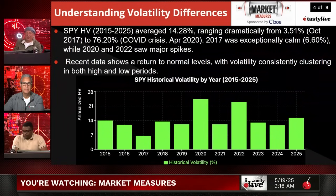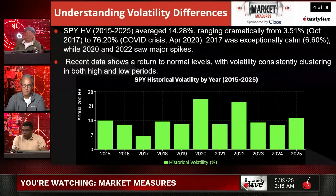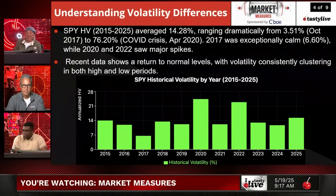The SPY historical volatility for 10 years averaged 14.28%, ranging from 3.51% to 76.20% in the COVID crisis. 2017 was exceptionally calm at an average of 6.6%, while 2020 and 2022 saw major spikes. 2017 was Trump's first year in office and we felt the chances of having volatility at 6.6% was zero — and it was.